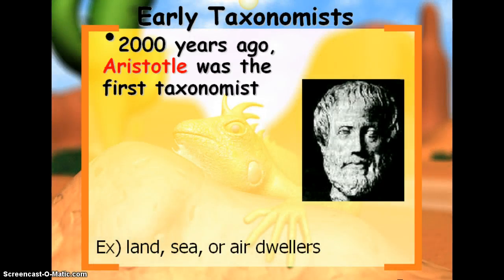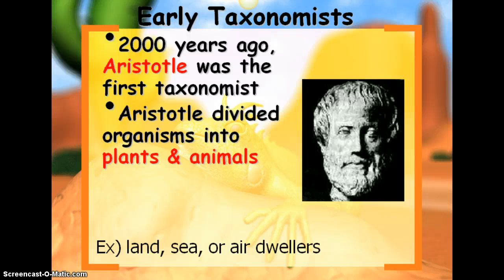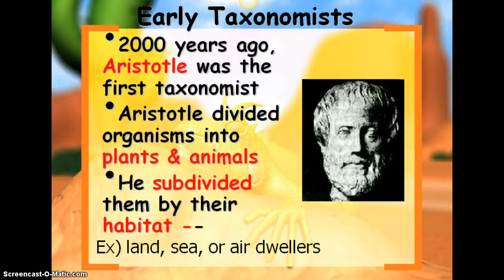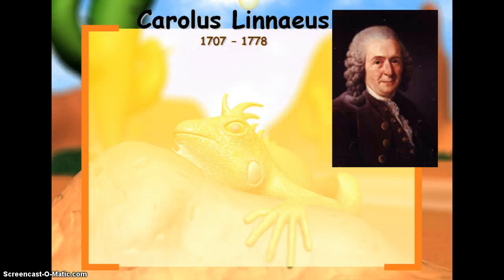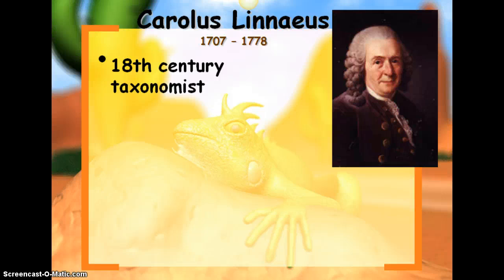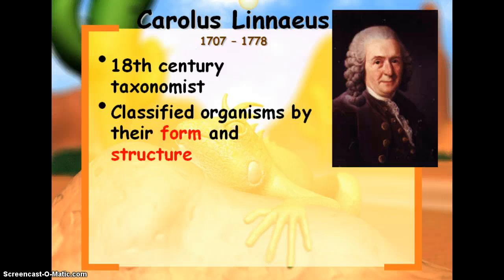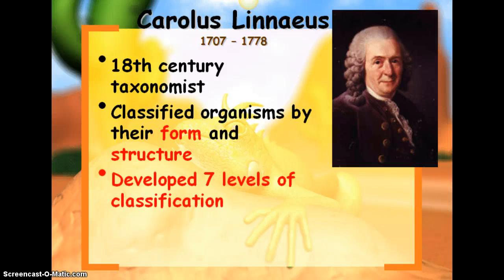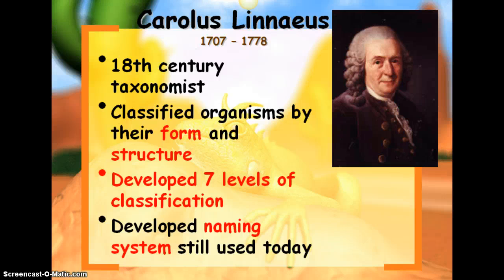So early taxonomists — the first real taxonomist was Aristotle. He separated organisms based on whether they were a plant or an animal, and then where they lived: land, sea, or air. From this we've modified classification based on Linnaeus, who was alive from 1707 to 1778 and is considered the father of taxonomy. He classified organisms by form and structure. You need to know the difference between what Aristotle did and what Linnaeus did. Currently we use Linnaeus' form of classification. He developed seven levels of classification and the naming system we still use today, called binomial nomenclature.